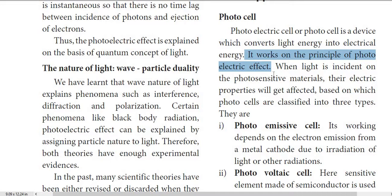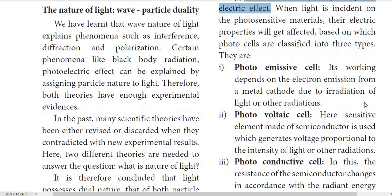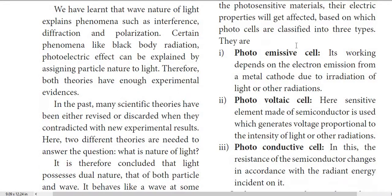When light is incident on photosensitive materials, their electric properties get affected. Based on this, photocells are classified into three types: photoemissive cell, photovoltaic cell, and photoconductive cell.